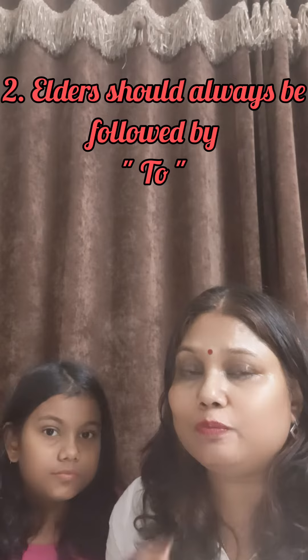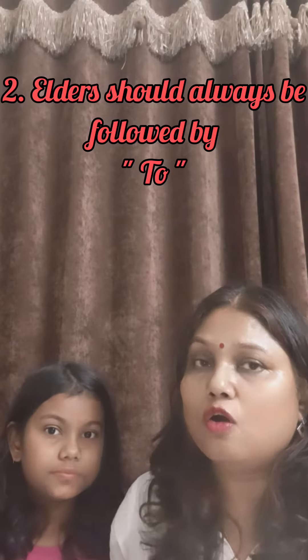Difference number two: elder should always be followed by 'to'. For example, his son John is two years elder to his daughter Jia. Whereas older should be followed by 'than'. For example, Radha is older than all her friends.